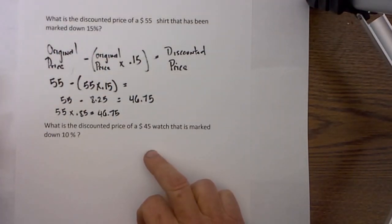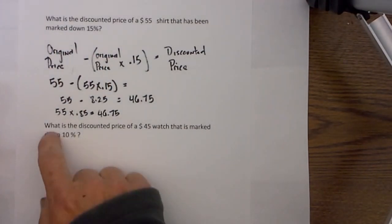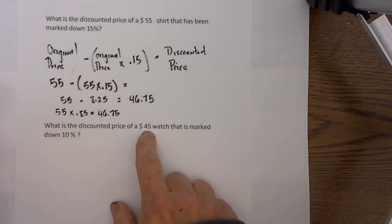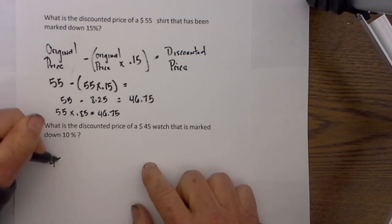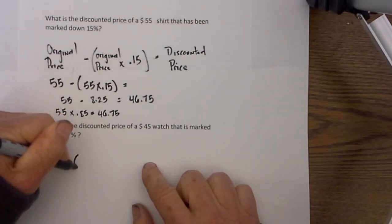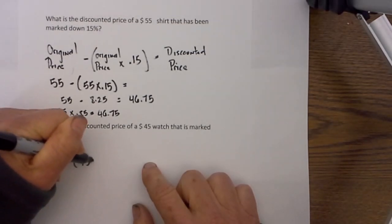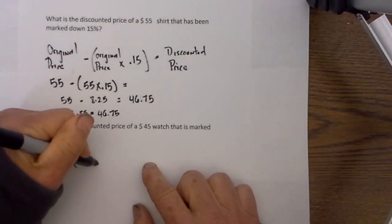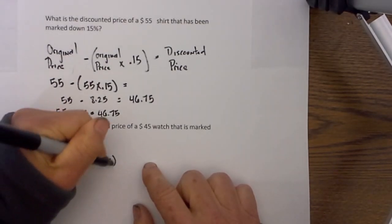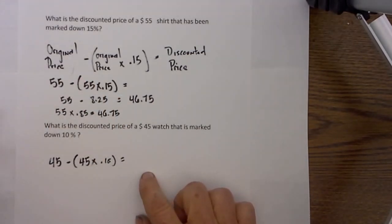Let's look at another example. Here we have what is the discounted price of a $45 watch that is marked down 10%. I will take the original price minus the original price times the decimal form of the percent, and move the decimal to the left. That is .10, which equals the discounted price.